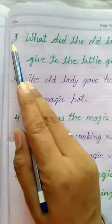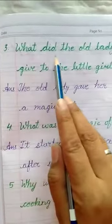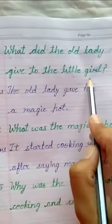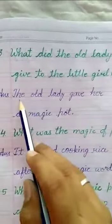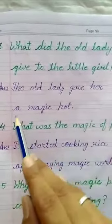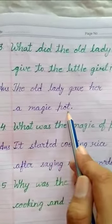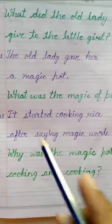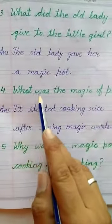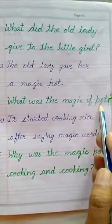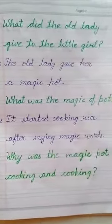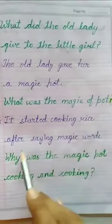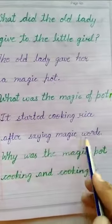Third question: What did the old lady give to the little girl? The old lady gave her a magic pot. Fourth question: What was the magic of the pot? The magic pot started cooking rice after saying the magic words.